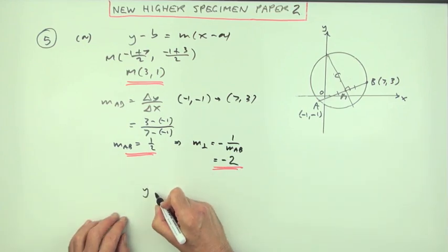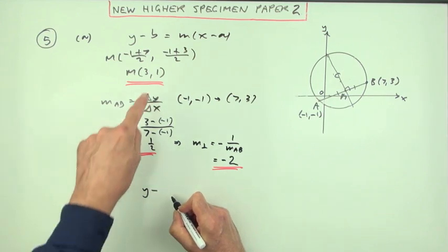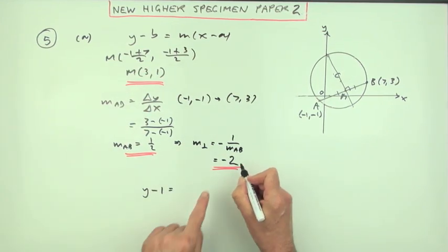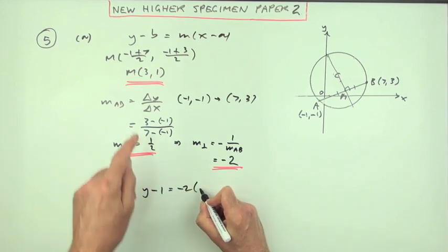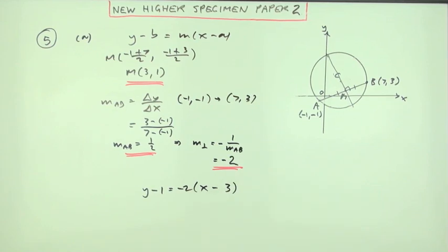Now we can get the line: y minus the y-coordinate is the gradient, -2, times (x minus the x-coordinate). And of course you know that just does for the mark, but I'm not happy to leave it like that. I'm going to finish it off: y = -2x + 6 + 1 is +7.